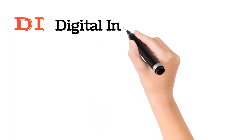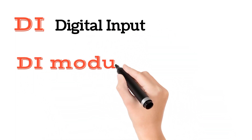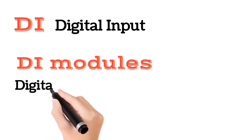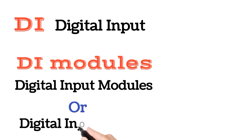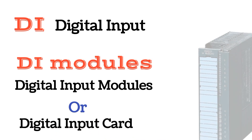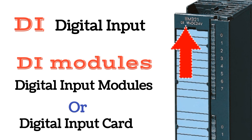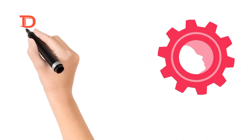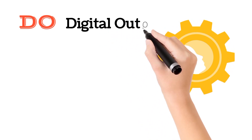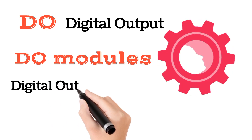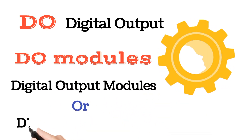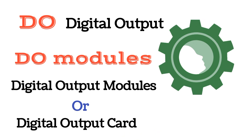DI means digital input. DI modules means digital input modules, also known as digital input cards. On a DI module, DI is written just like AI and AO, so you can easily recognize it. DO means digital output. DO modules means digital output modules, also known as digital output cards.